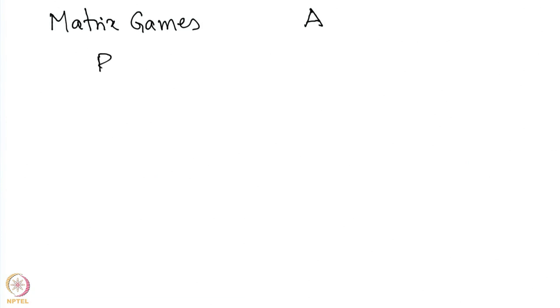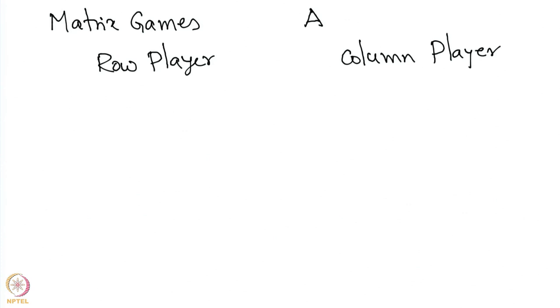In a matrix game, there are two players: the row player and the column player. The row player is player 1 and the column player is player 2. Player 1 chooses a row, player 2 chooses a column, and the corresponding matrix entry gives the payoff of player 1. The same amount is what player 2 pays.